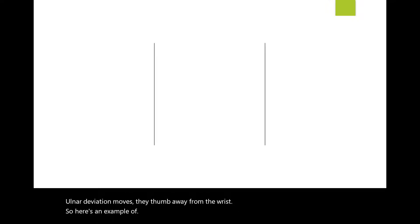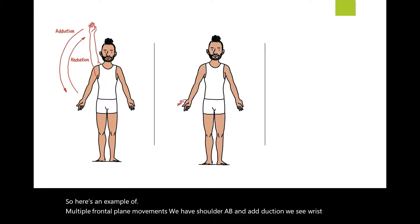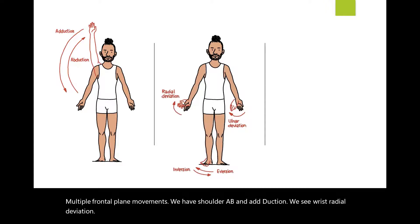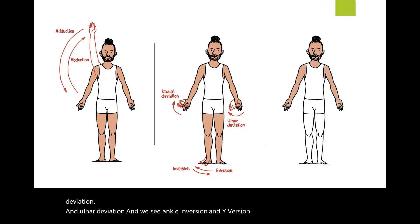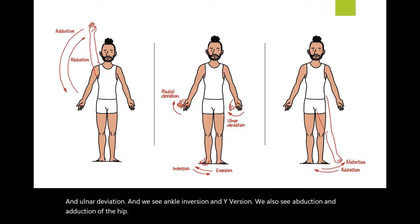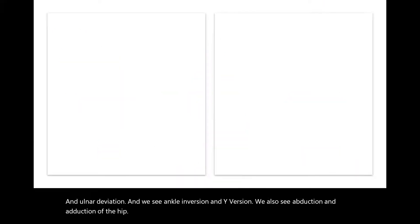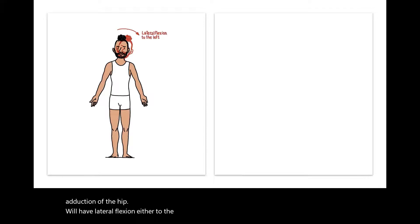Here's an example of multiple frontal plane movements: we have shoulder abduction and adduction, wrist radial and ulnar deviation, and ankle inversion and eversion. We also see abduction and adduction of the hip. The neck will have lateral flexion either to the left or to the right.